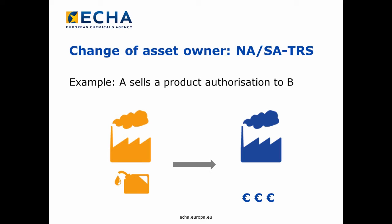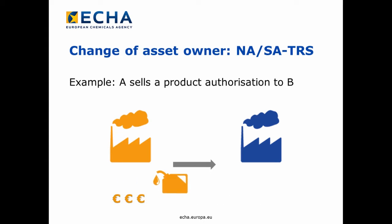Companies A and B have agreed. Company B receives the authorization once the payment has been settled with company A. We will see how an asset transfer is done in R4BP3.